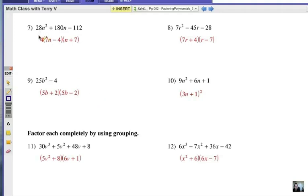Here we go. Now the first thing we've got to do here is factor out a 4. Now if you do that, and that's why that 4 is on the outside there, if you divide each of these by 4, you're going to get 7n squared plus 45n minus 28.